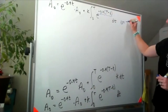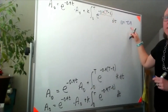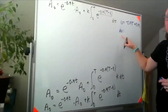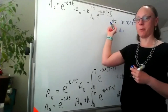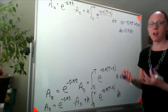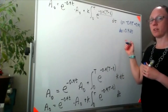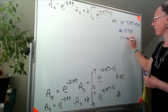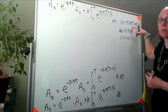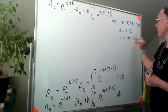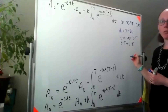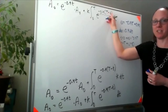For my U-substitution, I'm going to let everything in the exponent equal U. So U equals negative 0.4 big T plus 0.4 little t. Taking the derivative with respect to little t — the variable in my integral — du equals 0.4 dt. Switching the limits: when t equals 0, U equals negative 0.4T; and when t equals big T, U equals 0, since big T minus big T is 0.